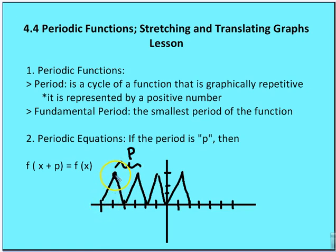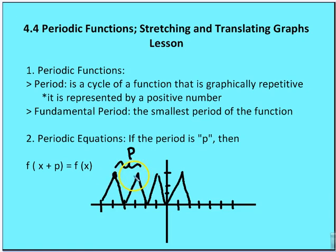You can measure the period from peak to peak or from trough to trough — basically from start to end of one cycle. The length from x to y is the period. And one cycle of a function is from peak to peak, or one full period of the function.